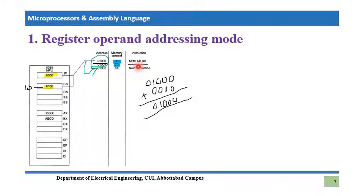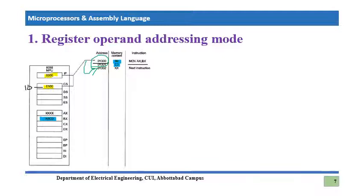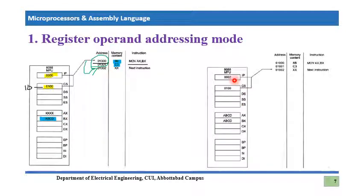After execution, the IP will increment by two, pointing to the next instruction at 01002. This is a 16-bit operation since BX and AX are 16-bit registers. The value of BX is ABCD, which gets transferred into AX. After execution, IP becomes 0002 and AX becomes ABCD, while BX remains unchanged. This demonstrates how register operand addressing mode works.